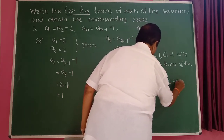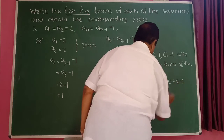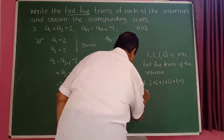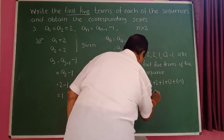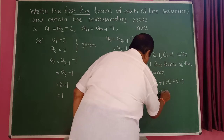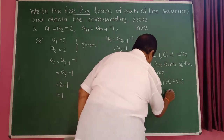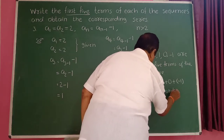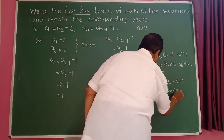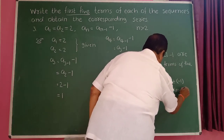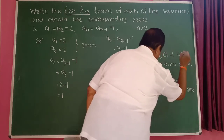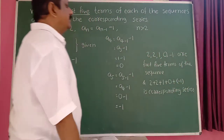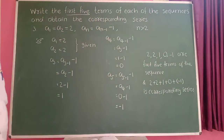The corresponding series is 2 plus 2 plus 1 plus 0 plus minus 1. This is the corresponding series.